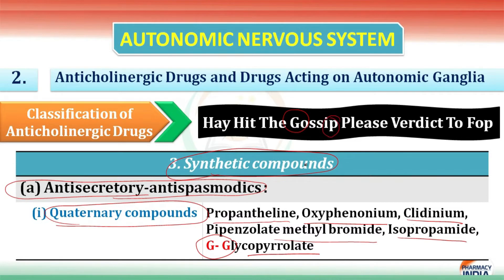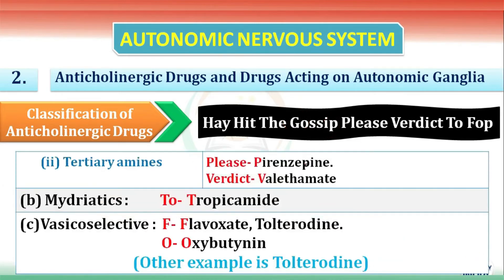The next category is tertiary amines. There are two drugs: P for pipenzolate and V for valethamate — that is 'please verdict' in the mnemonic.